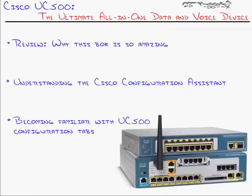That should give you a good idea of the UC500 — not only why this box is so amazing and what it's designed to do, but also what it looks like to set it up and what Cisco's goal was with the Configuration Assistant: a point-and-click GUI walking tab by tab through configuration of everything we saw how to do using the command line with Unity Express and Call Manager Express. I hope this has been informative for you, and I'd like to thank you for viewing.